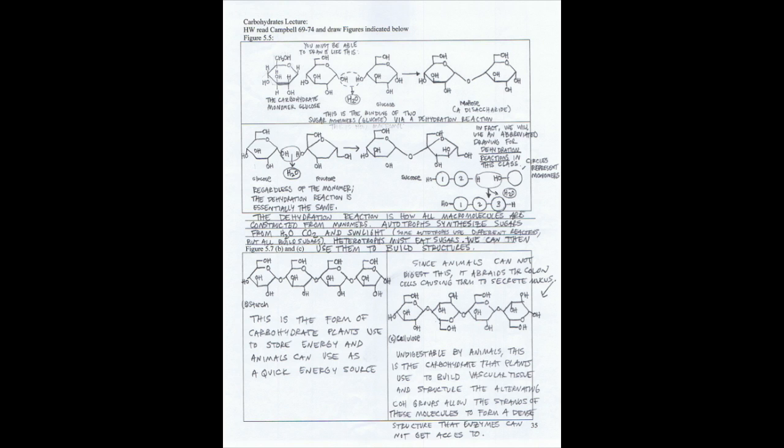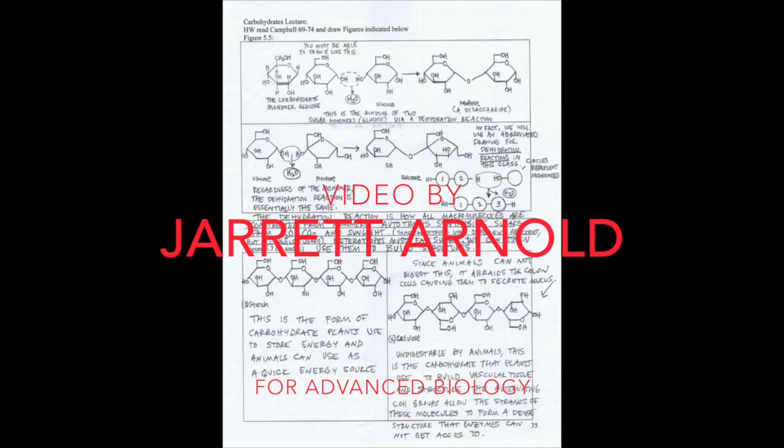Autotrophs synthesize sugars from water and carbon dioxide using sunlight as an energy source. Heterotrophs must eat sugars. We can then use them to build structures in our bodies.